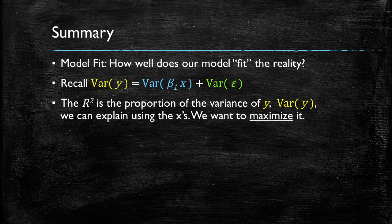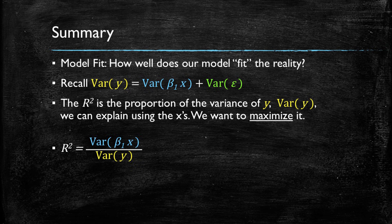The R squared is the proportion of the variance in y that is explained by the variance in the x's, and we want to maximize it. And this is nothing more than a ratio of these two parameters that we want to get as close to one as possible.